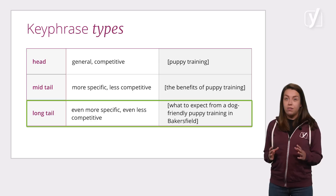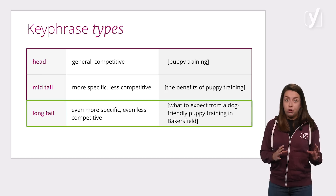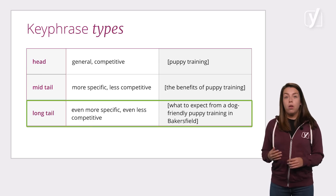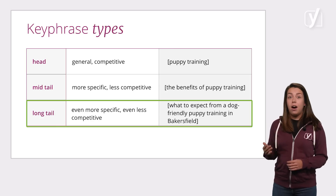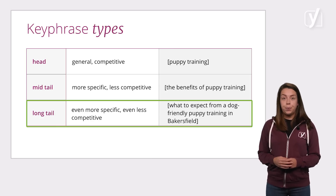Long-tail keyphrases are very specific and have very little search traffic. An example could be 'what to expect from a dog-friendly puppy training in Bakersfield'. Although long-tail keyphrases get less search traffic, they usually have a higher conversion value, as they focus more on a specific product or topic. Whether you should go after long-tail keyphrases or head terms largely depends on your competition. If competition in your niche is high, you'll have a hard time ranking on competitive head terms and should probably focus on longer-tail keyphrases. If you have little competition, you might be able to rank for head terms.